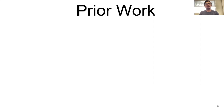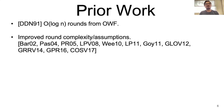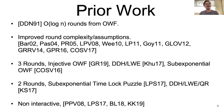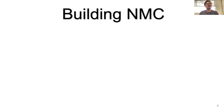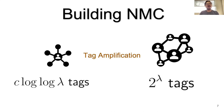Looking at prior work: we started in 1991 with a logarithmic-round protocol from one-way functions for non-malleable commitments, and since then round complexity and assumptions have improved — we now have three-round, two-round, and non-interactive protocols. Non-interactive schemes are built via a two-step mechanism: first, build a non-interactive non-malleable commitment scheme for O(log log λ) many tags, then apply a tag amplification procedure to obtain a scheme supporting 2^λ exponentially many tags.